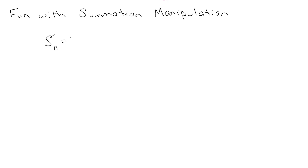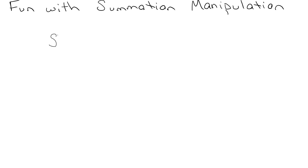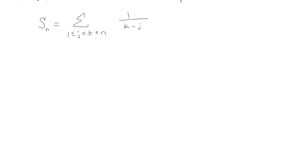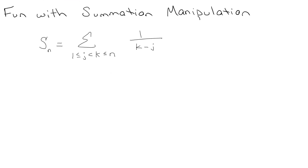They define this summation S sub n, where it goes over 1 ≤ j < k ≤ n of 1/(k − j). For me to make sense of it, my brain doesn't work like this — apparently because other people are infinitely smarter — so I have to rewrite it.